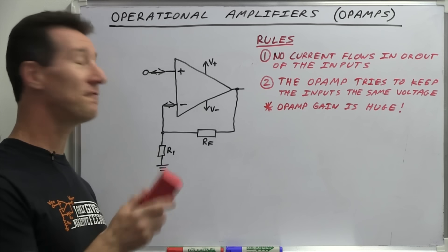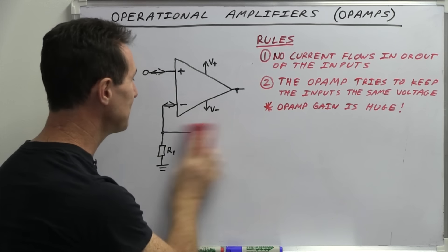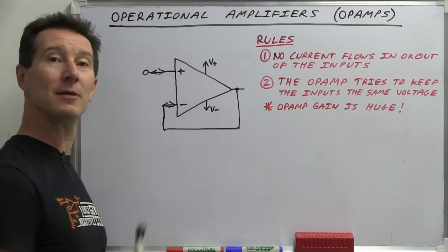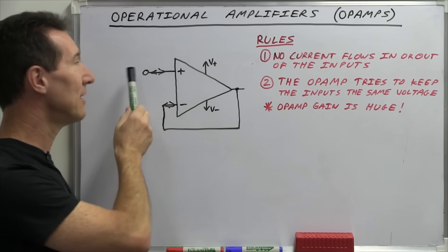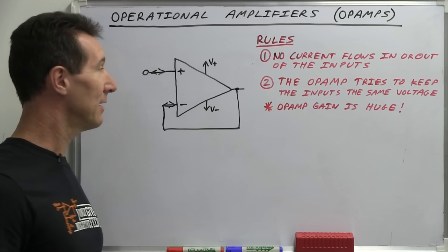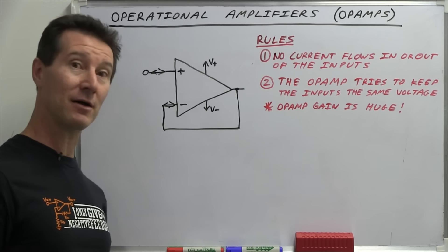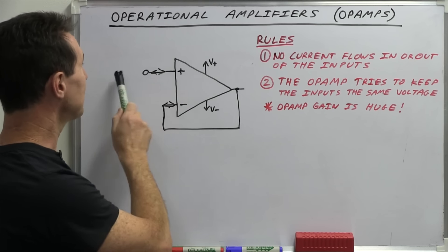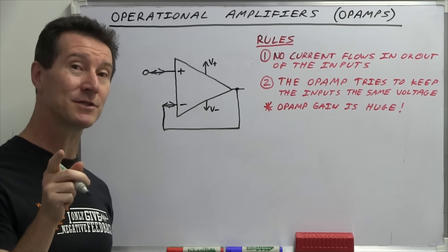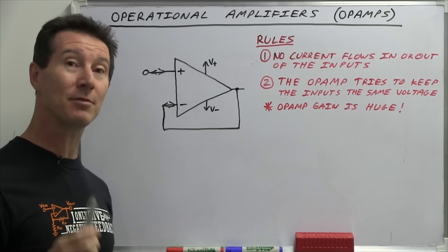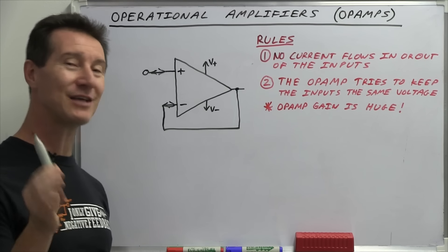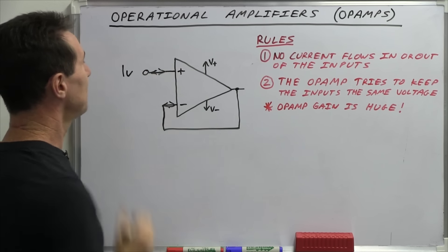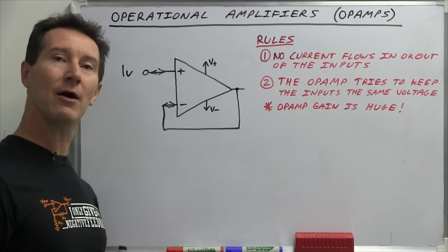So using these two rules, let's look at the simplest op amp configuration possible. It actually has no external components. What it has is the output tied back to the inverting input, and you feed your signal or voltage into the non-inverting positive input. This is called an op amp buffer. So using our two rules, very easy to analyze this op amp buffer circuit. Let's just do DC, because op amps are DC-coupled amplifiers — they can amplify DC as well as AC signals. Very important property.